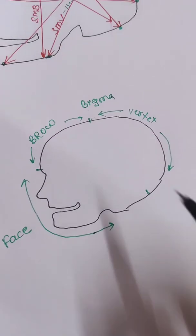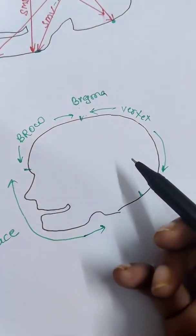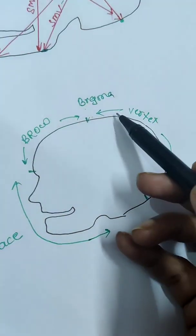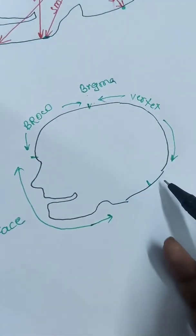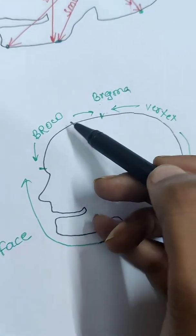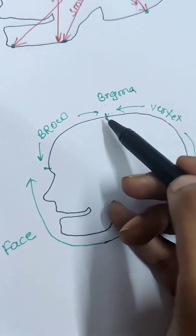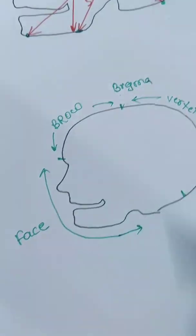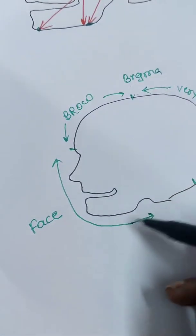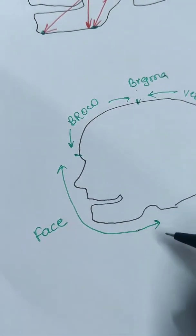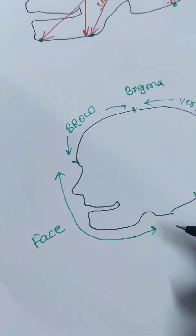In vertex presentation, the diameter extends from the bregma till the coronal sutures. In brow presentation, it extends from the bregma till the root of the nose. In face presentation, it extends from the root of the nose till the floor of the mouth.